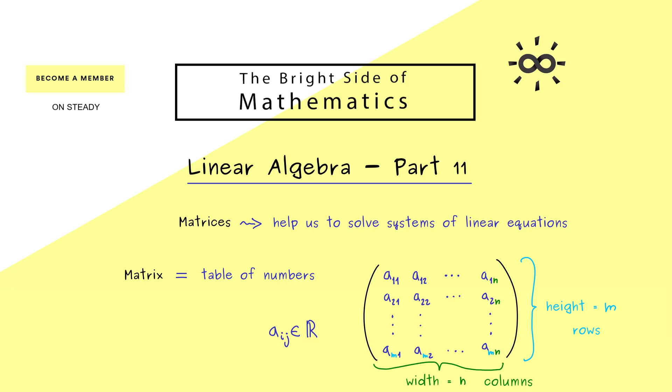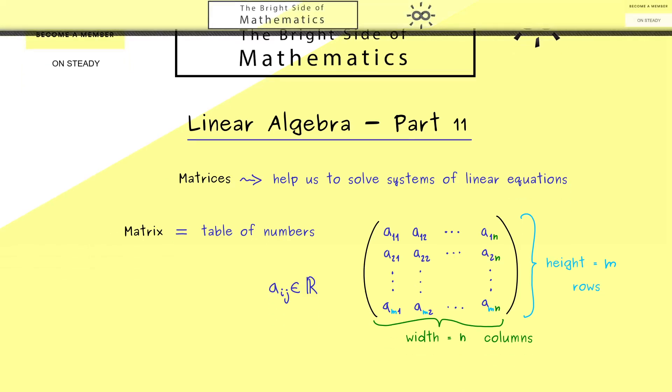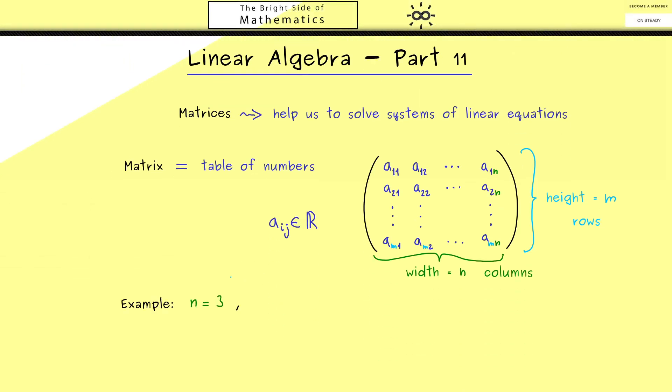Here the only assumption we put in for now is that all the entries in the matrix are real numbers. So without any problems we can immediately write down an example. So maybe we keep it simple, n should be equal to 3 and m should be equal to 2. Therefore now we have 6 numbers and maybe we start with 4 and 6, and maybe we put in pi as well and maybe the square root of 2 and 1 and 0.